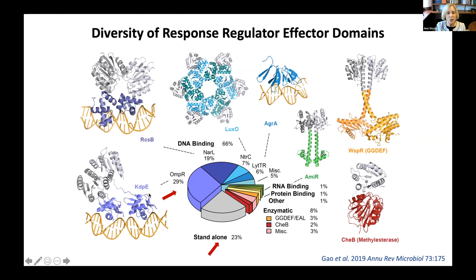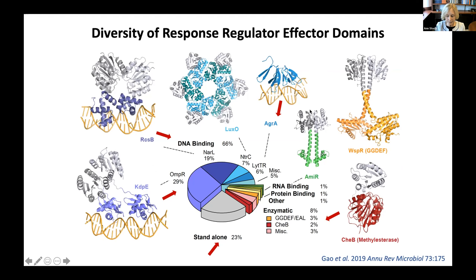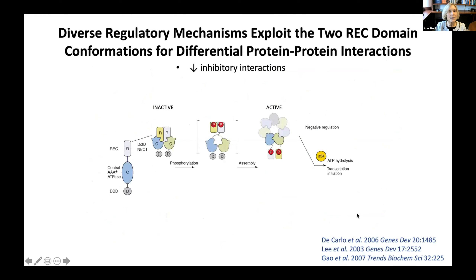Our lab has contributed to the characterization of some of these families. We determined the structure, in collaboration with Helen Berman, of the DNA binding domain of OmpR, establishing a winged-helix fold for the largest family of response regulator transcription factors. We determined the structure of Staphylococcus aureus AgrA, establishing the unusual beta-sheet fold for the LytR family of transcription factors that regulate virulence in pathogens. We determined the first structure of a multi-domain response regulator, the chemotaxis methylesterase CheB, and also the first structure of a response regulator transcription factor in both inactive and active conformations — a NRL family member involved in vancomycin resistance in Staphylococcus aureus. Not surprisingly, given the diversity in effector domains, there's great variation in the mechanisms of regulation of their activities by receiver domains.